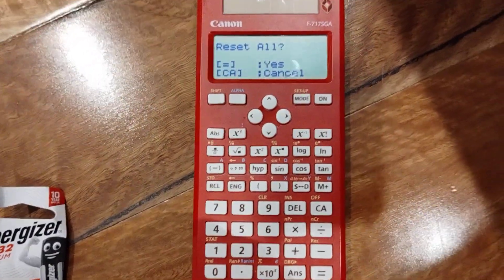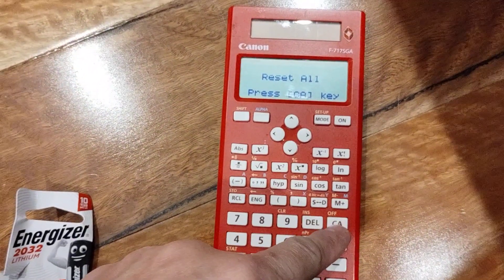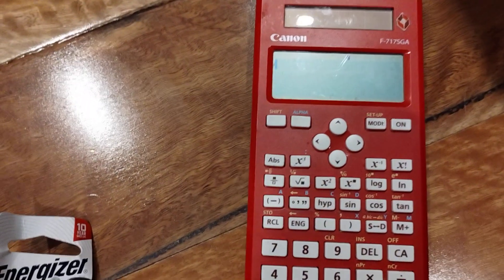Press equal for yes to reset all, and then CA. That's it. Thanks for watching.